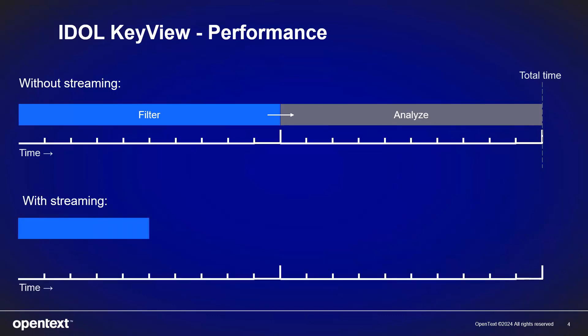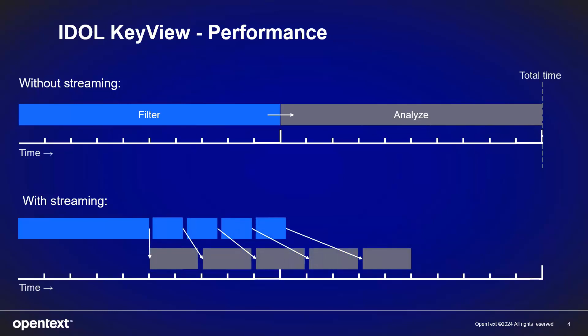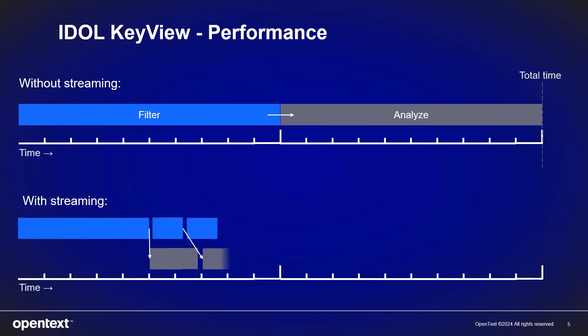With streaming, KeyView gives you back each chunk of text as it becomes available. That means you can start analysing the first block before you even have the second. By filtering and analysing at the same time, you can increase the responsiveness of your application as the total time taken is less. And if you find what you are looking for before you reach the end of the data, you can stop the process.